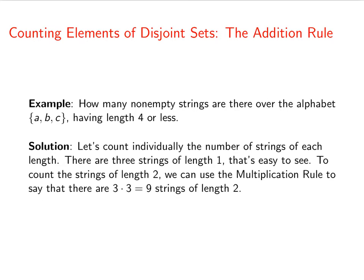Now length two. We can use the multiplication rule. That tells us there are nine strings of length two. When I make a string of length two, I have three choices for the first letter and three choices for the second letter. In a similar way, there are three cubed and three to the fourth strings of length three and four, respectively.